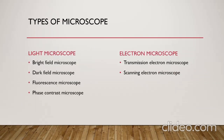There are mainly two types of microscope: light microscope and electron microscope. In light microscope, there are bright field microscope, dark field microscope, fluorescent microscope, and phase contrast microscope. In electron microscope, there is transmission electron microscope and scanning electron microscope.